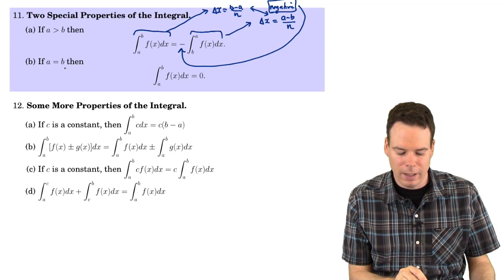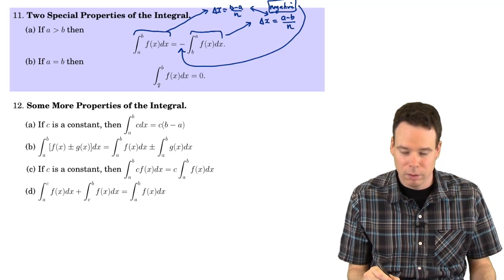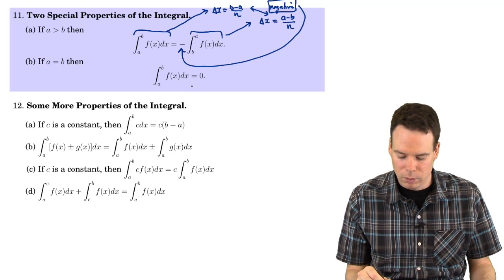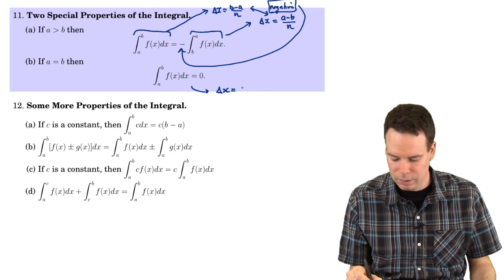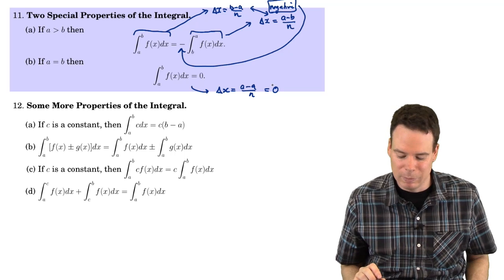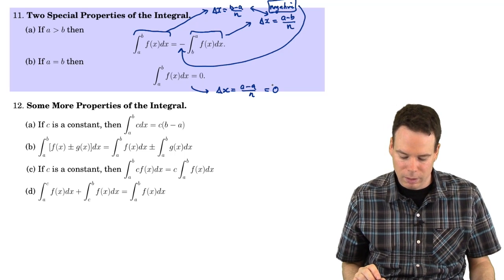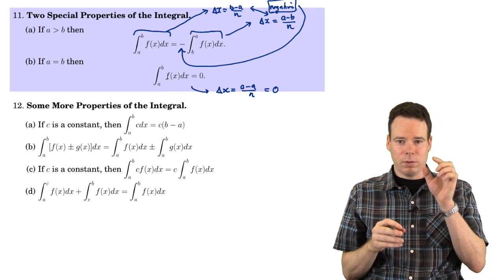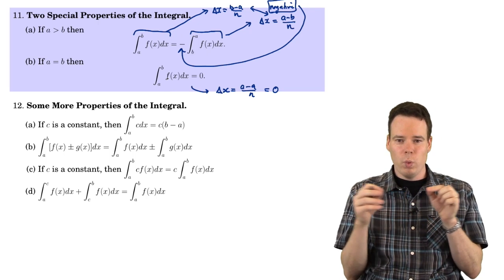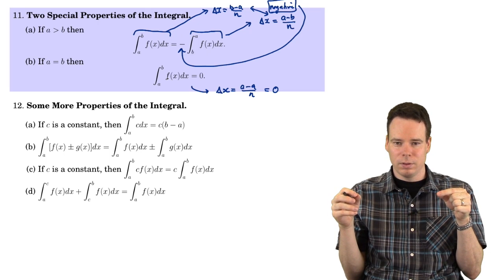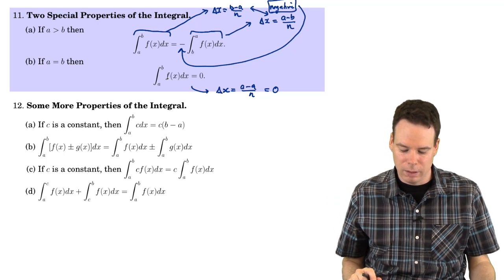What about the next case? If a is equal to b — if your limits of integration are exactly the same — then the integral is zero. If delta x is zero, then the limit of your Riemann sum would be zero. Another way to think about this: if you're integrating your function from a to a, there is no width to the region you're trying to find the area of, so the area has to be zero.